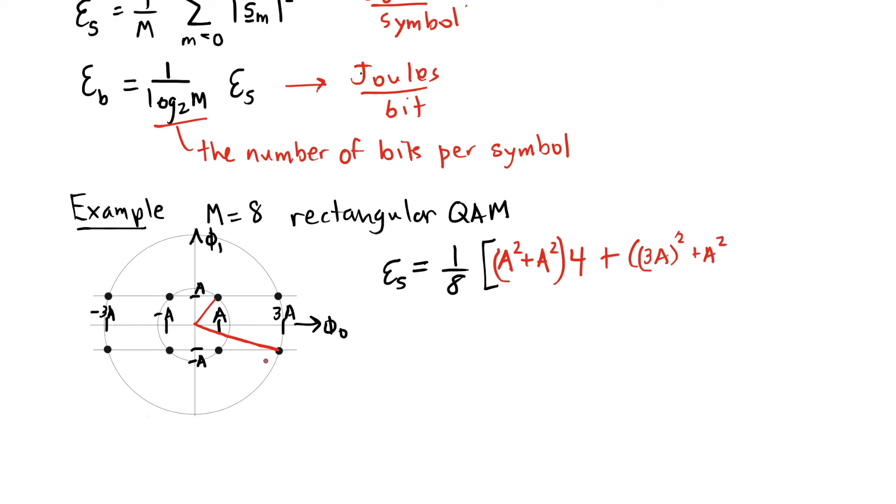That's the squared distance of this constellation point. And there are again four of these constellation points, symbol points, that are on this outside circle. So I know they all have the same amplitude, so I'm going to multiply that by 4 again.